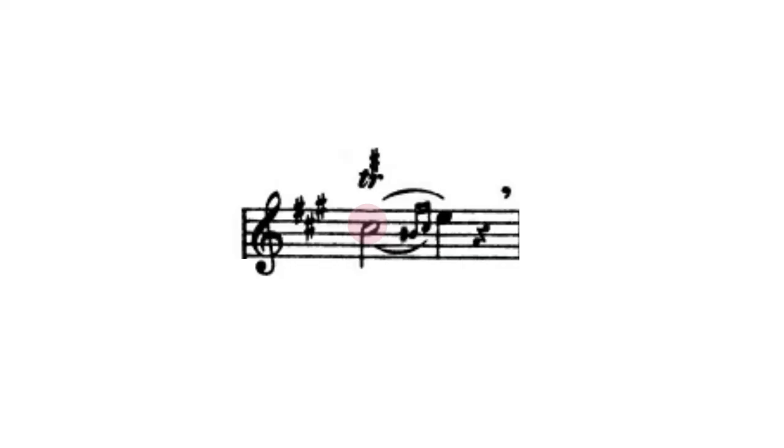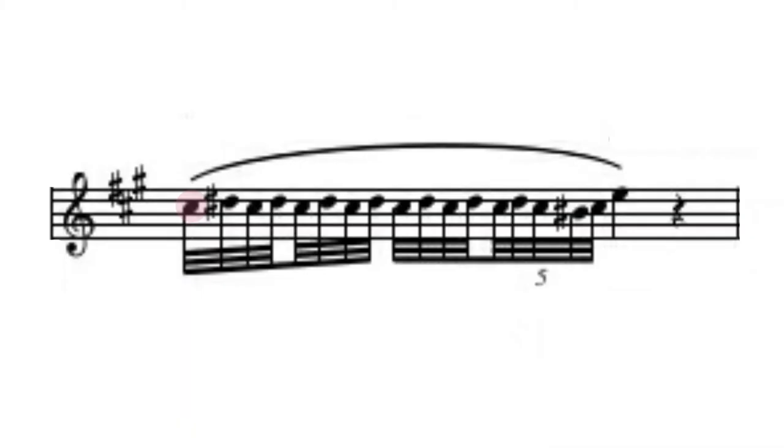Now let's talk about another type of trill that starts on the principal note and comes with the termination. If your score did not indicate a small acciaccatura note before the principal note, that means you have to start your trill on the principal note and then followed by the note above, and the trill has to end on the principal note. Therefore, you will have a triplet figure in the termination.